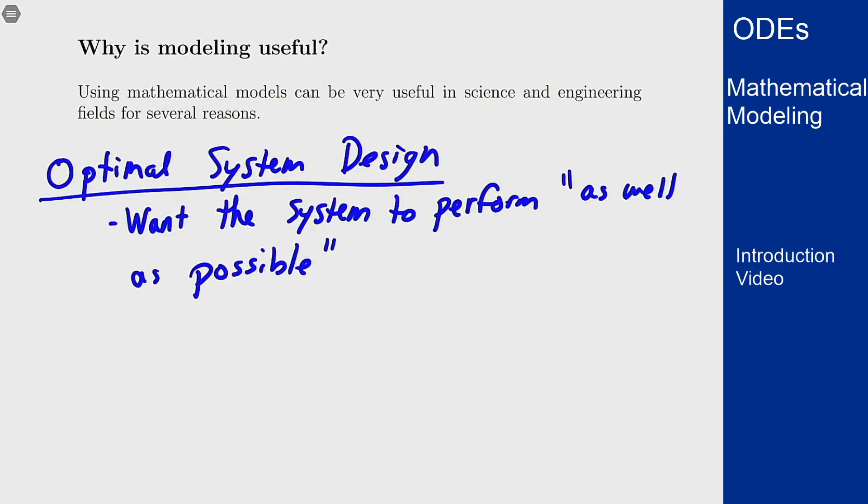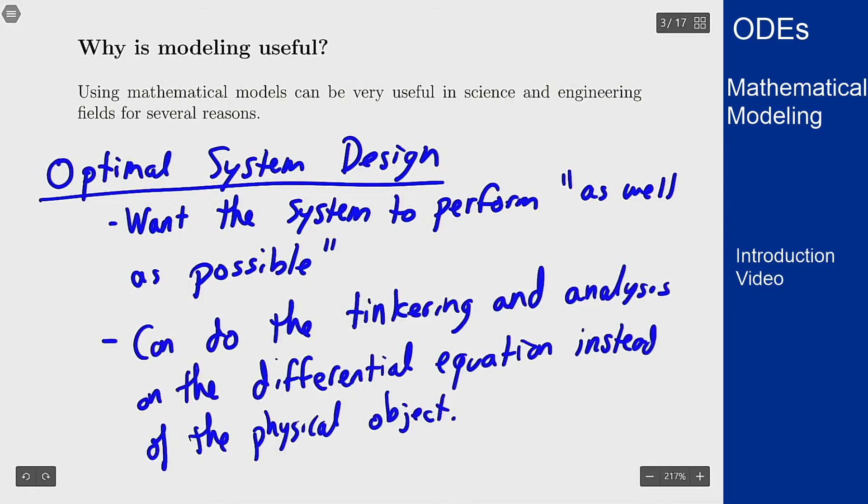I can do my tinkering on the model part, the differential equation part, which is easy and doesn't cost any money, and then I can try to implement it in a physical model to see if it works. You might be able to, from the differential equation, get an exact value for what the setup needs to look like to be as good as possible and then see what happens when you actually implement it.